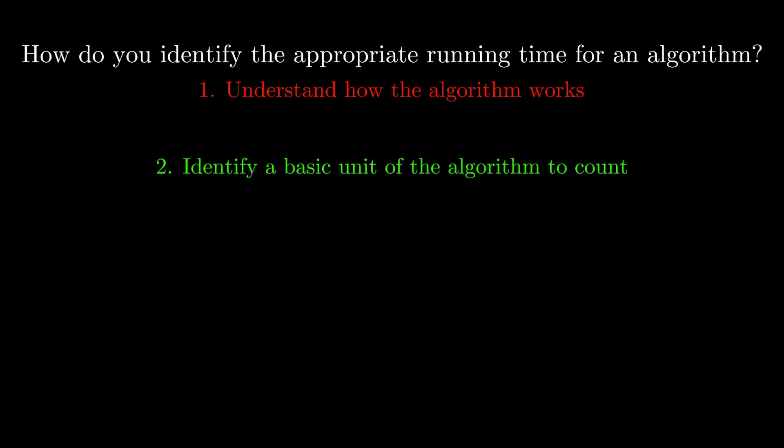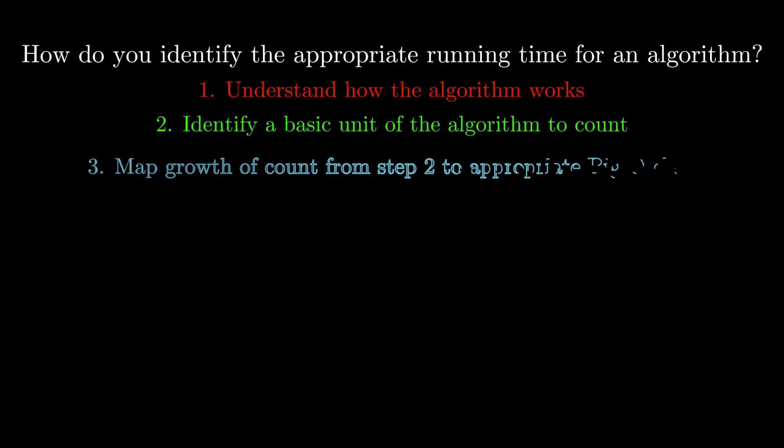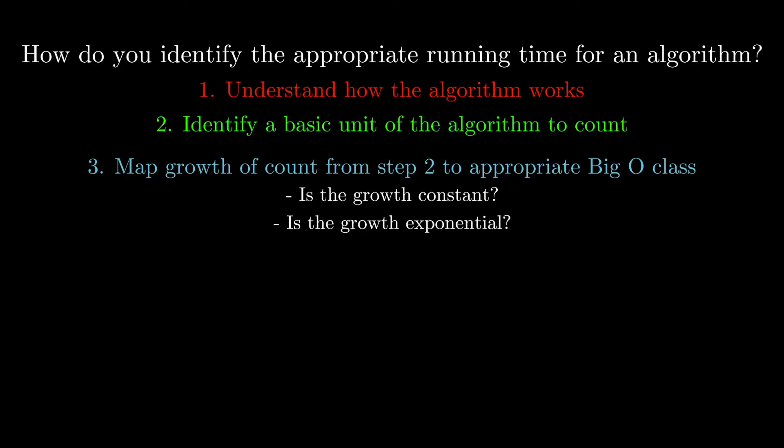Second, we want to find some basic unit to count, as we did earlier. Good things to count are things like the number of times something is printed, number of times a variable has been assigned, number of iterations, etc. We want this basic unit to be something that encapsulates the worst case of a function. What that means is we want to find the operations that will execute the most as the input becomes very large. Lastly, we want to match the growth of our counting unit as the input becomes very large to the class of runtimes that most closely represent this growth.